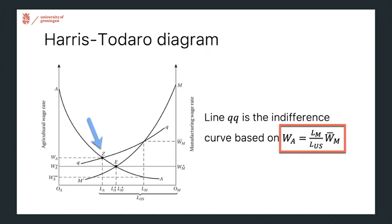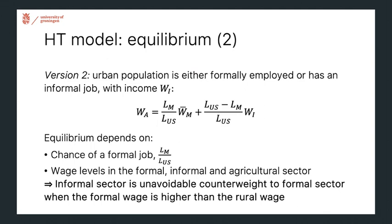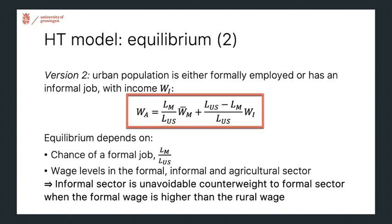That is not an entirely realistic assumption, because if you have no income, you tend to not live very long. So we have an extended model — version two — where an informal job is added. Unlike before, income doesn't drop to zero but to WI. Both WA and WI are determined in the market, emerging to ensure the equilibrium condition holds.